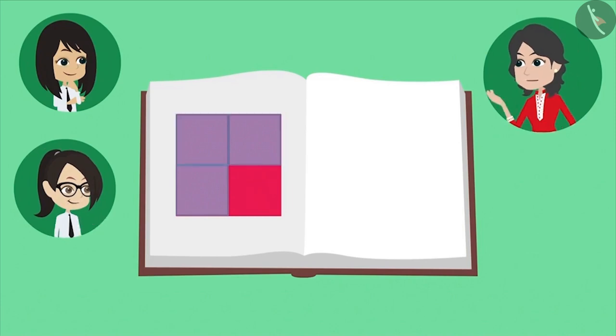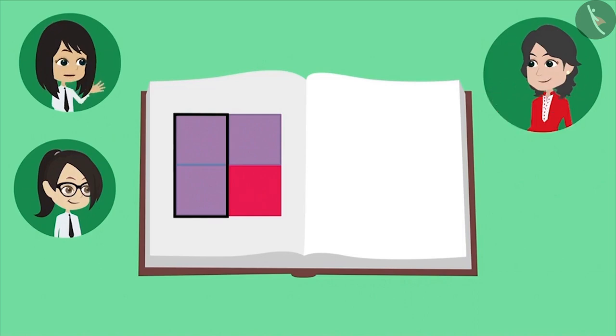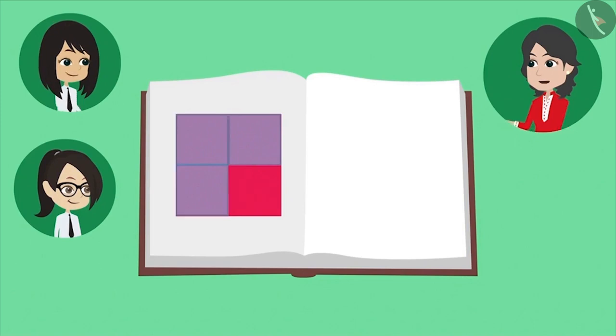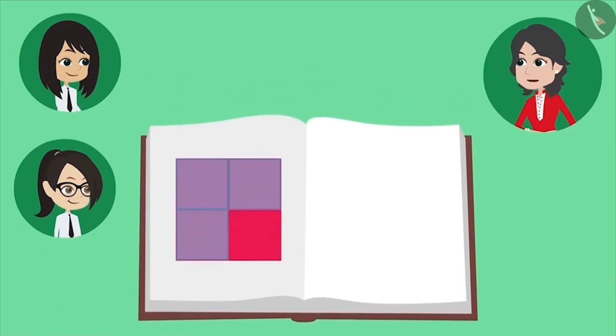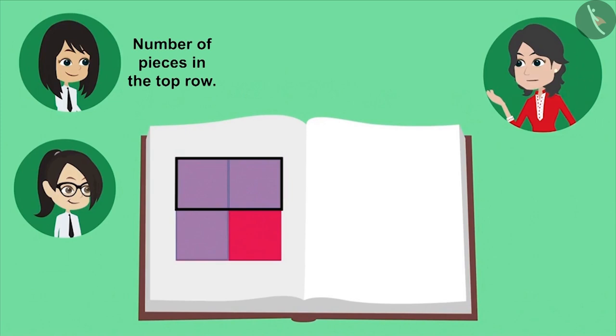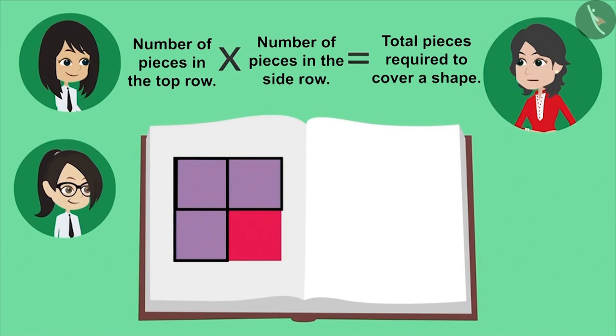Now, Neha, you tell me, how many pieces are placed in the side row? Madam, the side row also has two pieces. You both are right. Now, we will multiply the number of pieces placed in the top row by the number of pieces placed in the side row. This will tell us how many pieces will be required to cover this shape.